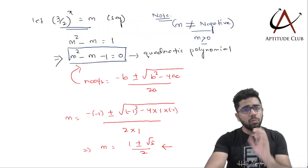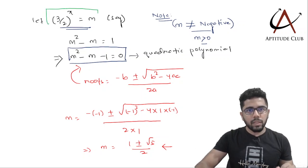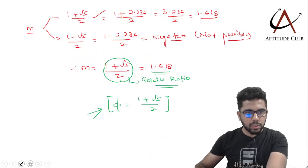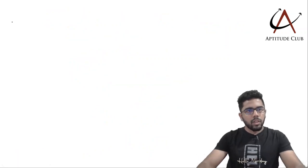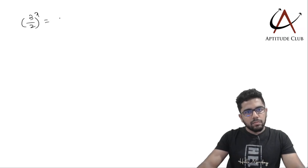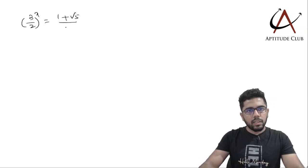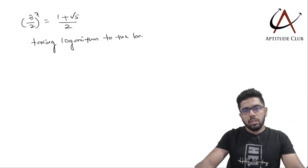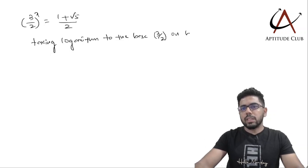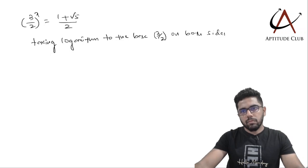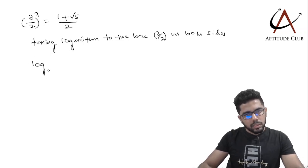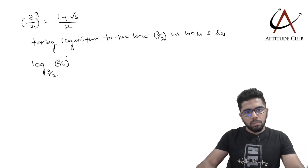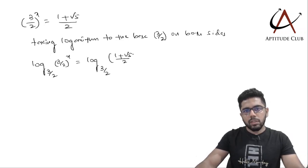However, our job is to find x. We know that (3/2) to the power x equals m, which is (1 + √5)/2. To solve for x, I will take logarithm to the base (3/2) on both sides. This gives: log base (3/2) of (3/2)^x equals log base (3/2) of (1 + √5)/2.